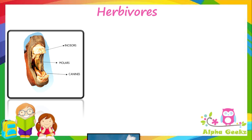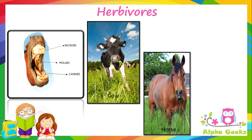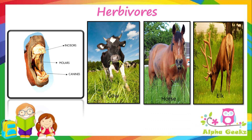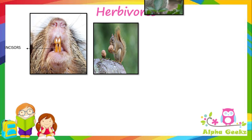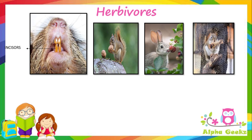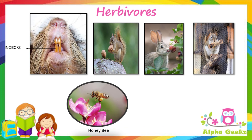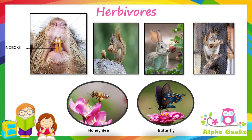Examples include cows, horse and elk. Animals such as squirrels and rabbits have razor sharp teeth to gnaw and bite on nuts, berries and wood. Insects like honeybee, butterfly, etc. are also herbivores as they primarily feed on the nectar obtained from flowers.